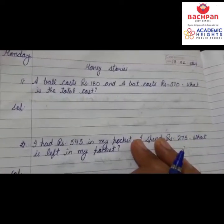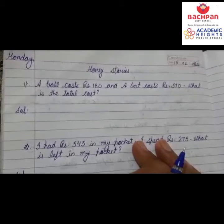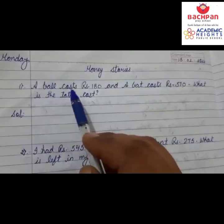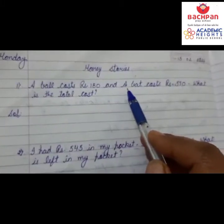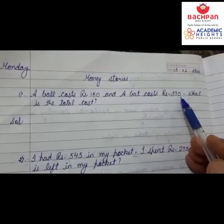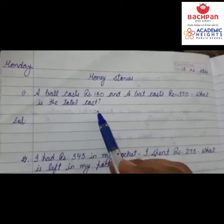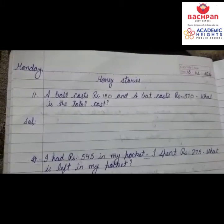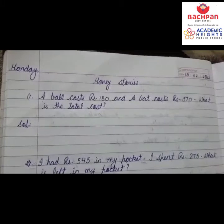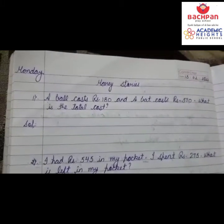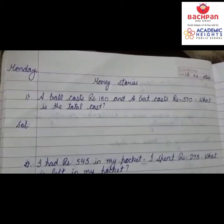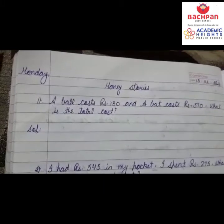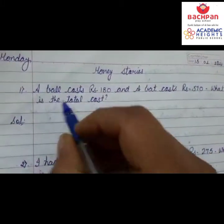Good morning, dear students! Today we are doing money stories. First, let's recall: we have done length stories, weight stories, and capacity stories. Today we will do money stories. To make a statement for money stories, we start with the word 'cost of' — just like length stories use 'length of,' weight stories use 'weight of,' and capacity stories use 'quantity of.'